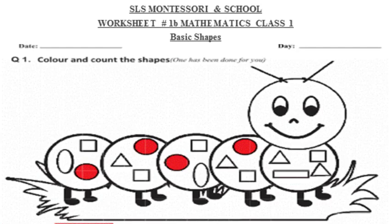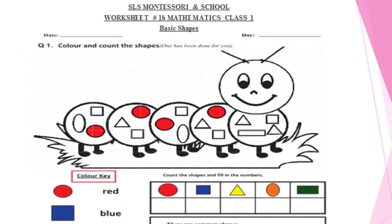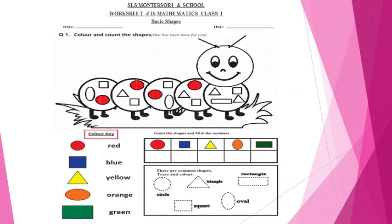Now let's do Worksheet 1B. First, write the date and day before starting your work. Question number one: color and count the shapes. You can see there's a caterpillar with many shapes drawn on its body. Color the shapes according to the given color key — circle: red, square: blue, triangle: yellow, oval: orange, rectangle: green.